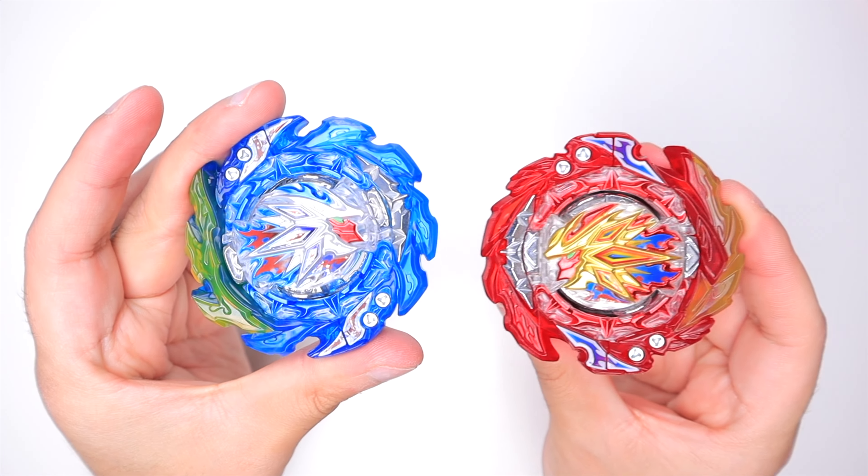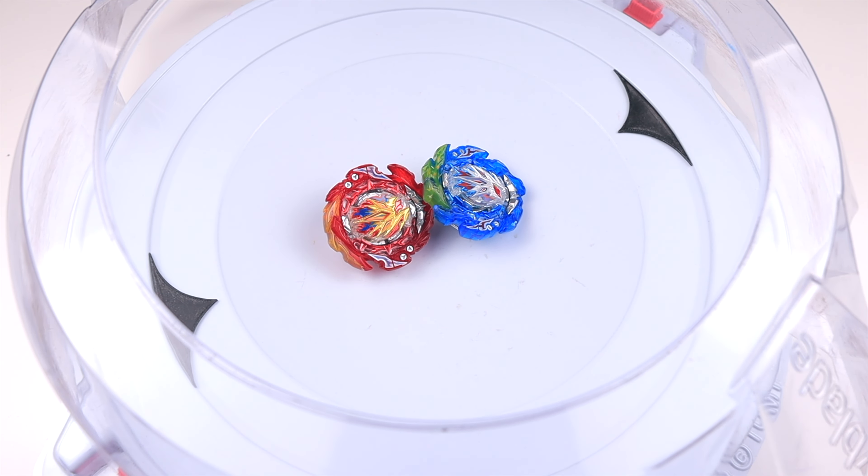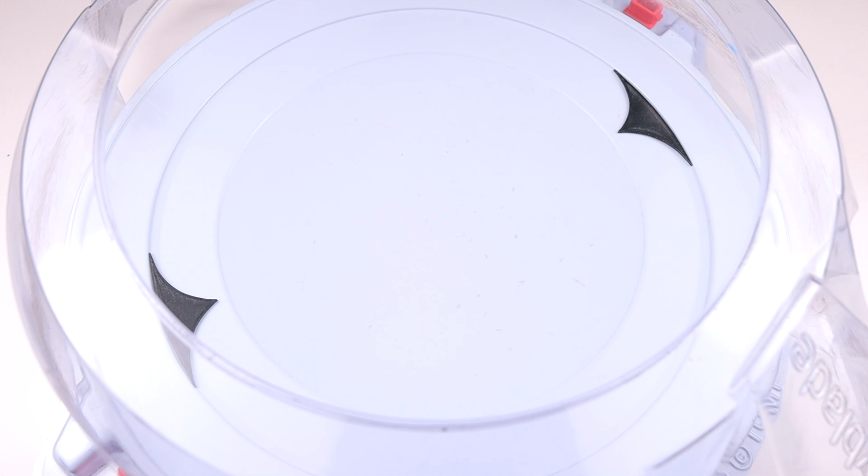Alright guys, this is my second time recording this now. I tried the B09 standard stadium and I just realized DB beys are way too big for that stadium. So we're going to stick with our standard DB stadium. I know the battles might not be as exciting but we'll make them exciting. We'll start off with Super Hyperion and King Helios, both of the modded Beyblades. I want to see how they'll do against each other. Alright, here we go.